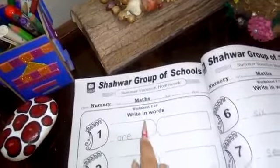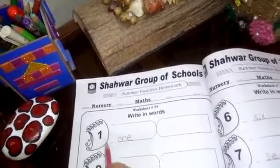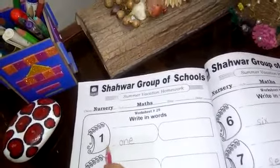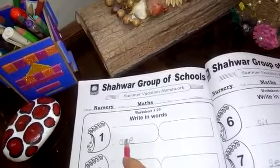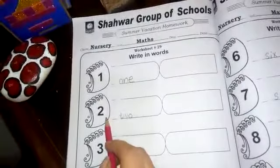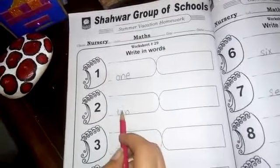Class nursery math, write in words. Which number is this? One. So we write in words: O-N-E, one. And which number is this? Two. So we write in two: T-W-O, two.